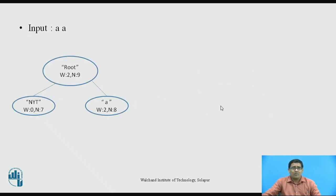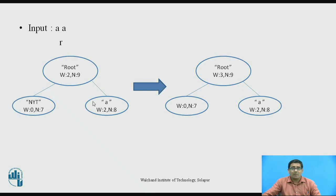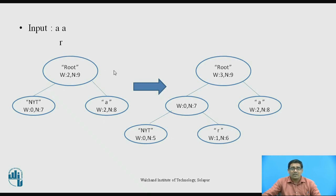Next, transmit the symbol R. Going to NYT (weight 0, N=7), add R to the left of the previous NYT. The NYT node number 7 splits: NYT becomes N=5 on the left, and R is added to the right with weight 1 and N=6. After that, adding 0 plus 1, the weight is 1 and N=7.